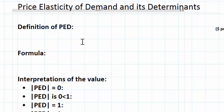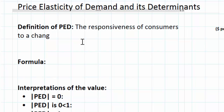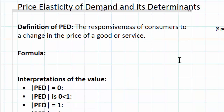This is the first type of elasticity we'll be covering in our unit on elasticities. PED refers to the responsiveness of consumers to a change in the price of a good or service. This is the most simple definition, but there is a way to quantify that responsiveness, and that's what the PED formula does for us.